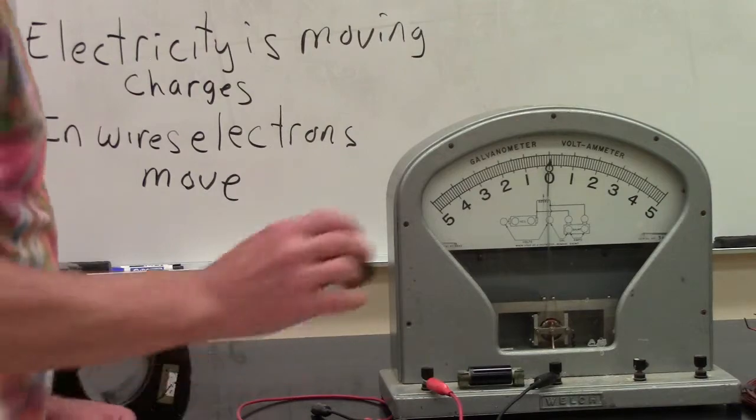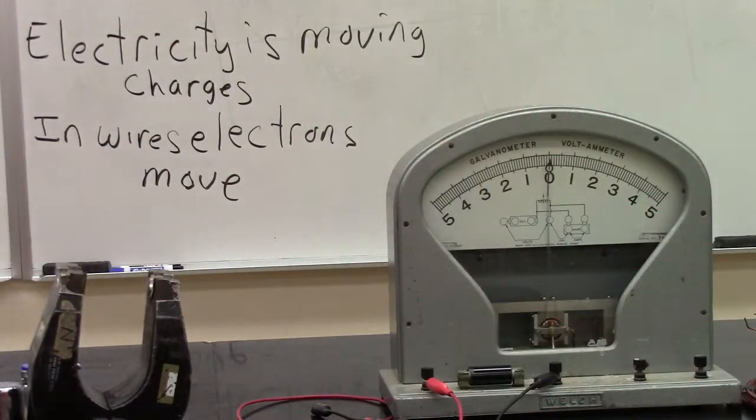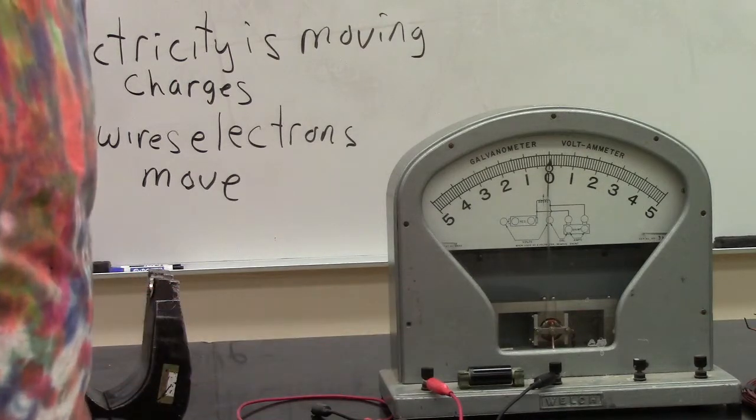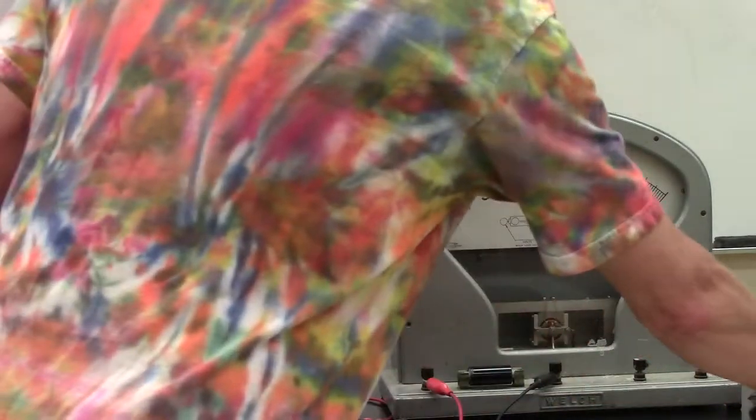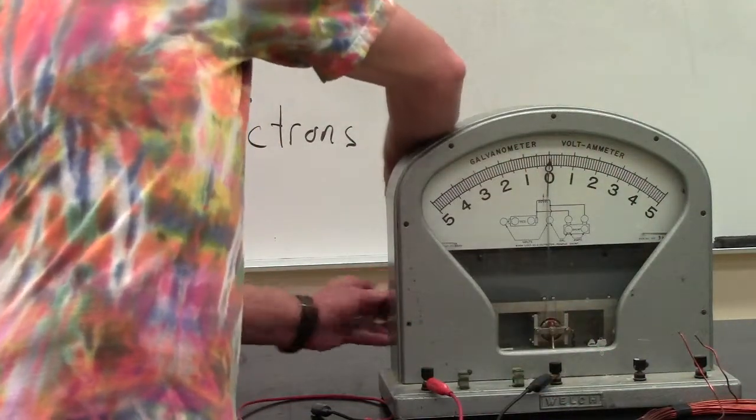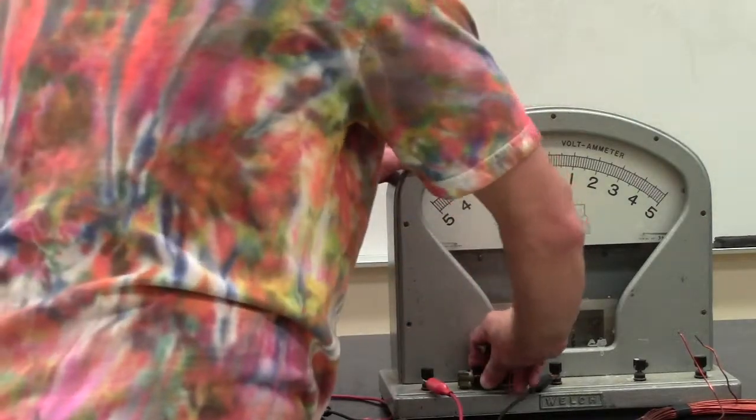How batteries move electrons is a little bit different. We'll take a look at that later on. Right now, I'll take a look at how, generally, most commercially available electricity is produced. Let me do a little change to our galvanometer, so it won't measure, because I can't make that much electricity.